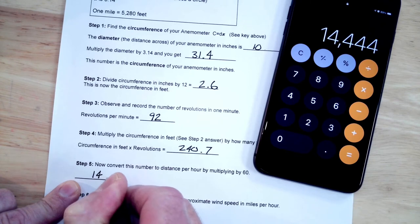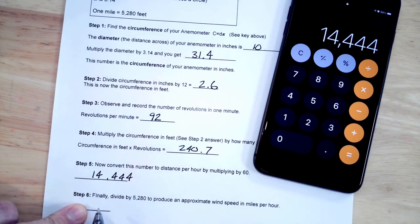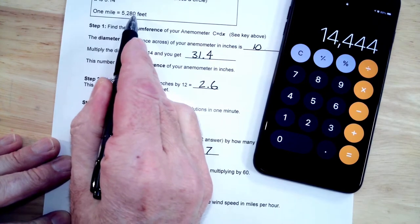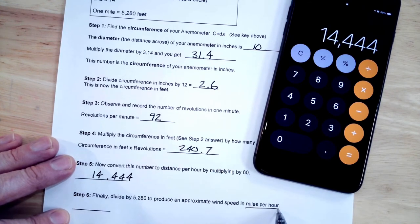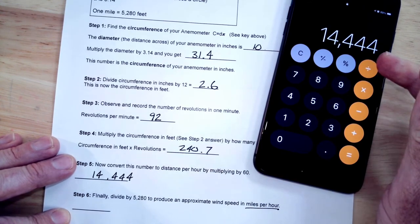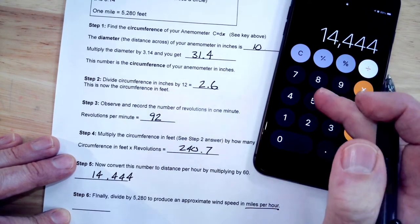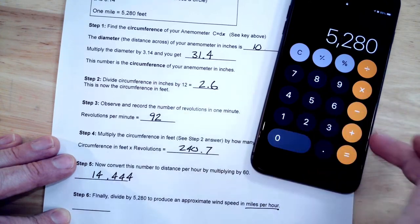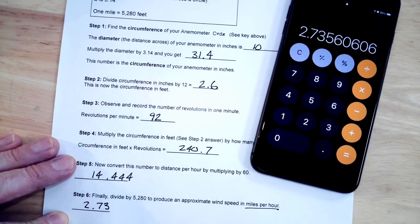And now step 6, I'm going to finally divide by 5,280. Again, that's how many feet in one mile, and that will produce an approximate wind speed in miles per hour. So we're going to divide this number by again 5,280, divide by 5,280, and that's going to give us 2.73.